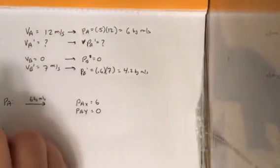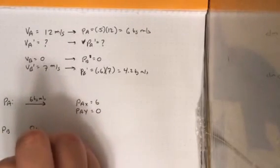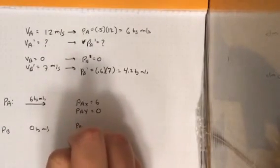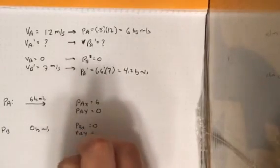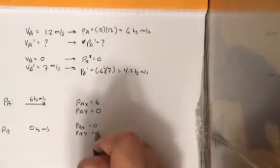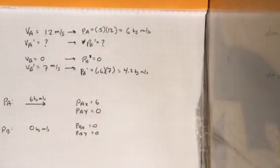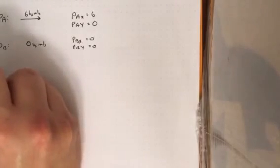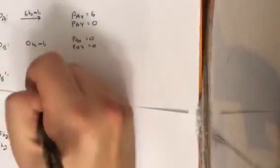All right. P B is not moving. So that's easy. That means both P B X is 0 and P B Y is 0. All right. Let's go on to P A prime. We don't know anything about, so I'm going to skip that for a second. But let's go on to P B prime.